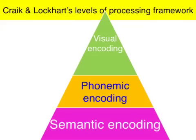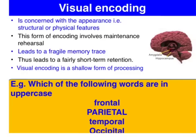According to the Craik and Lockhart levels of processing framework, there are three types or three levels of encoding: visual, phonemic, and semantic.